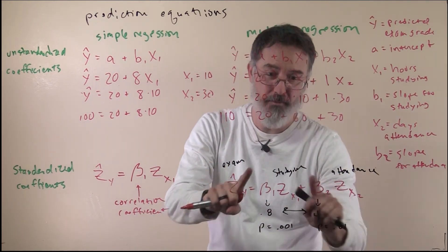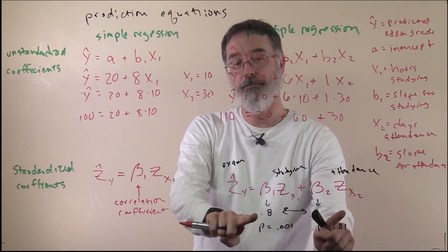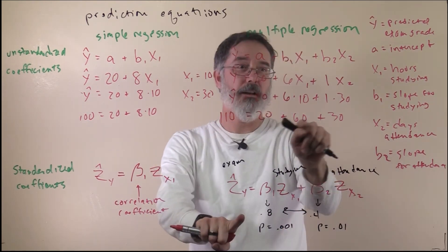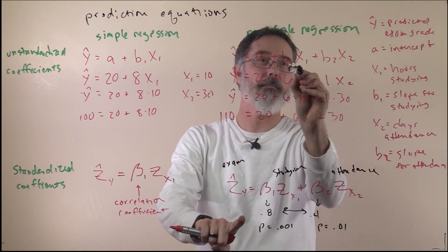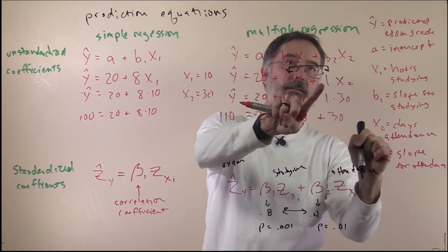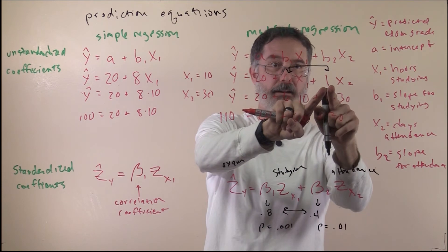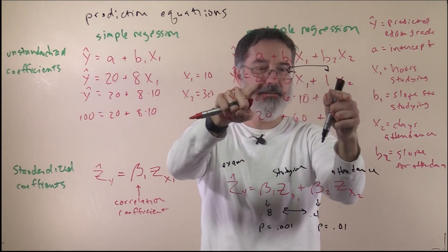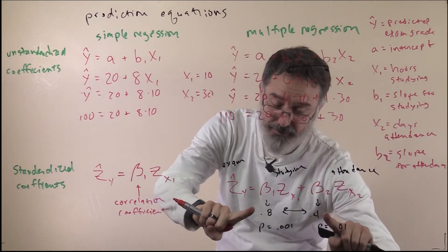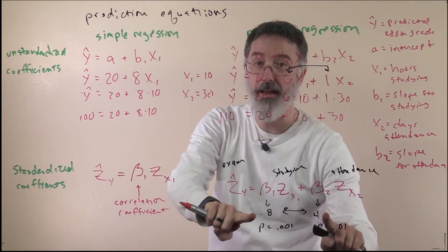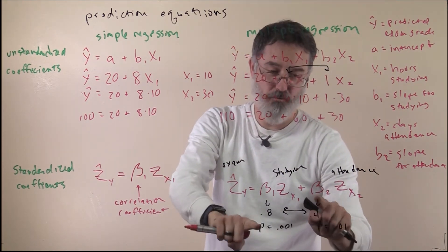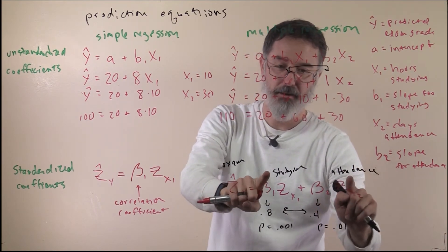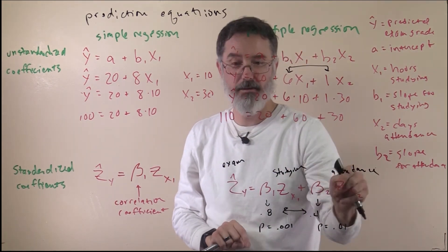Because the standardized coefficients are standardized, they are directly comparable — unlike the unstandardized coefficients, which are in different units: days attending class versus hours studying. You cannot compare 6 and 1, but the betas are essentially special correlations that you can directly compare, telling you which predictor has a stronger influence on the outcome variable. In this case, studying mattered more than attendance.